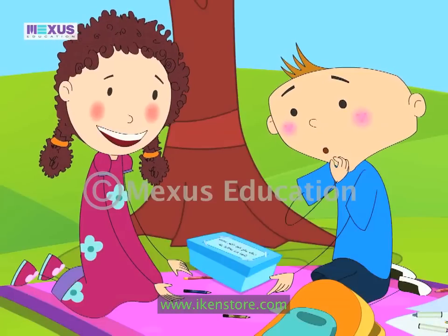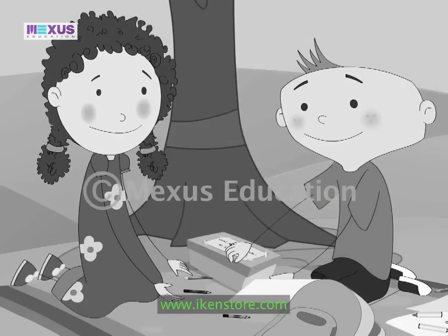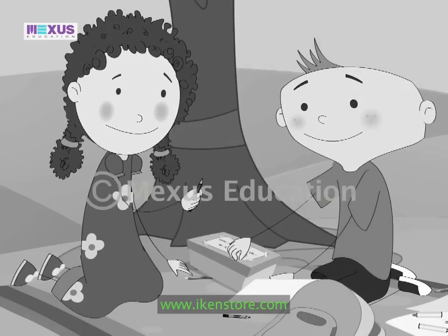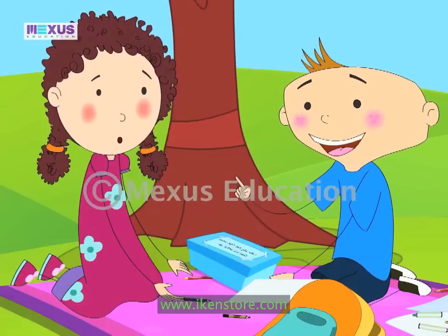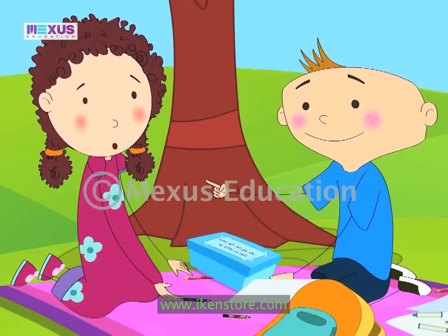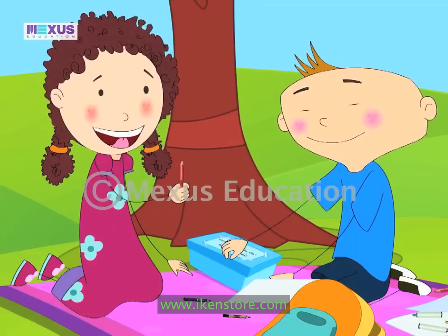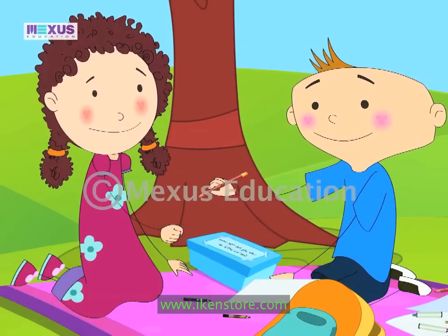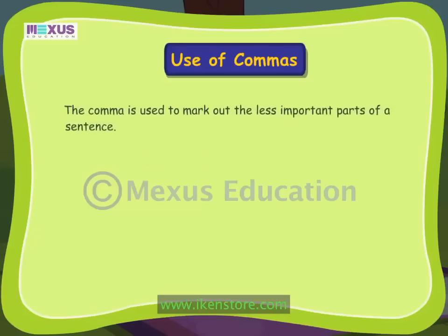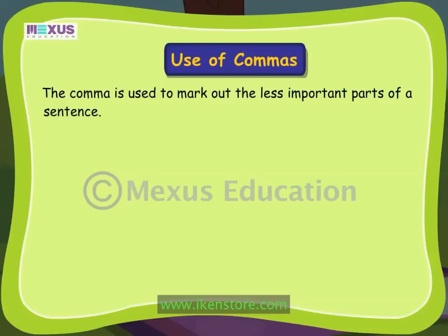Oh, now I get it! Weezy, can you give me that pencil please? Not this one, Weezy. The red pencil you gave me for my birthday is under the craft box. Oh, you mean this one? Here, take it. The comma is used to separate a word or a group of words from the rest of the sentence. In a way, it is used to mark out or separate the less important parts of a sentence. Let's take a look at the conversation ZZ and Fleck had earlier.